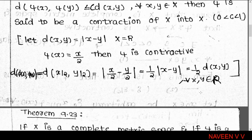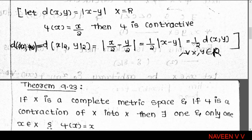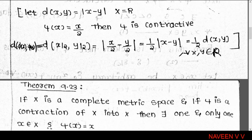As an example of a contractive map, consider the real line with the usual metric, that is d(x,y) = |x - y|. Let φ: ℝ → ℝ be the mapping defined by φ(x) = x/2. Then d(φ(x), φ(y)) = d(x/2, y/2) = |x/2 - y/2| = (1/2)|x - y| = (1/2) · d(x,y).